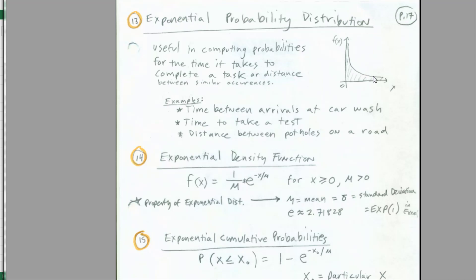There's a chart of the exponential distribution. It's real tall at the beginning, but then it gets smaller and smaller as it gets further out on the x-axis. So if we're talking about times between arrivals or times to stand in line, the longer the time, the smaller the probability.